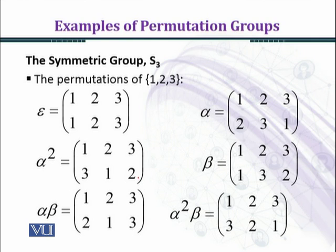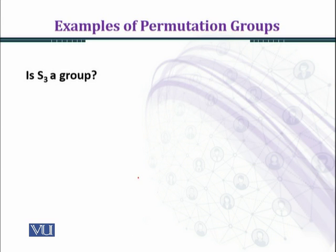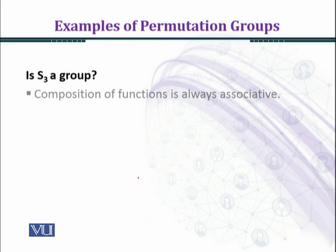We have now completed all 6 permutations of S3. Next we need to verify that S3 is a group by checking the group axioms. The composition of permutations in S3 is always associative, so the associative property holds.